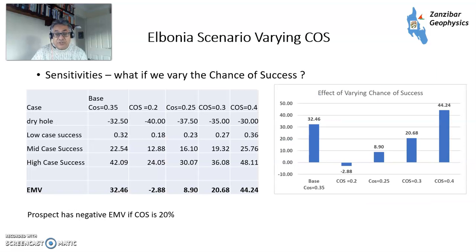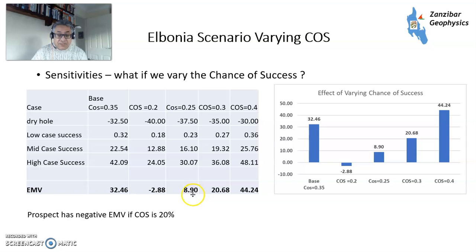What happens if we vary the chance of success? At a chance of success of 0.3, we have the value of the base case. If you take the chance of success down to 0.2, you get a negative value. So you'd need fairly negative geological indicators — given that the average chance of success on the play is 0.35 — for it to not be worth drilling. At 0.25 you still get a positive EMV, at 0.3 a positive EMV, and at 0.4 a very large positive EMV. Trying to polarize your risk is important because it saves you from drilling a likely dry hole and increases your expected monetary value. I also have a video using Bayes' theorem on that topic on my channel.